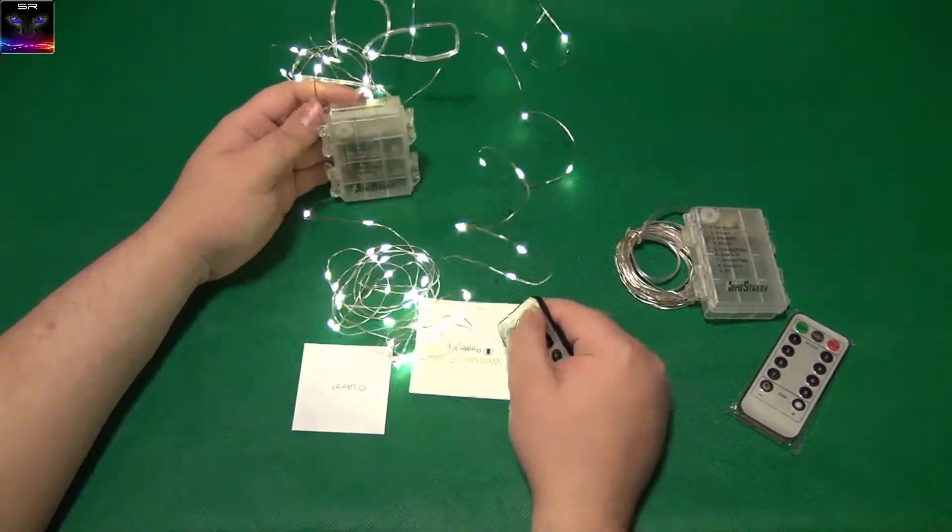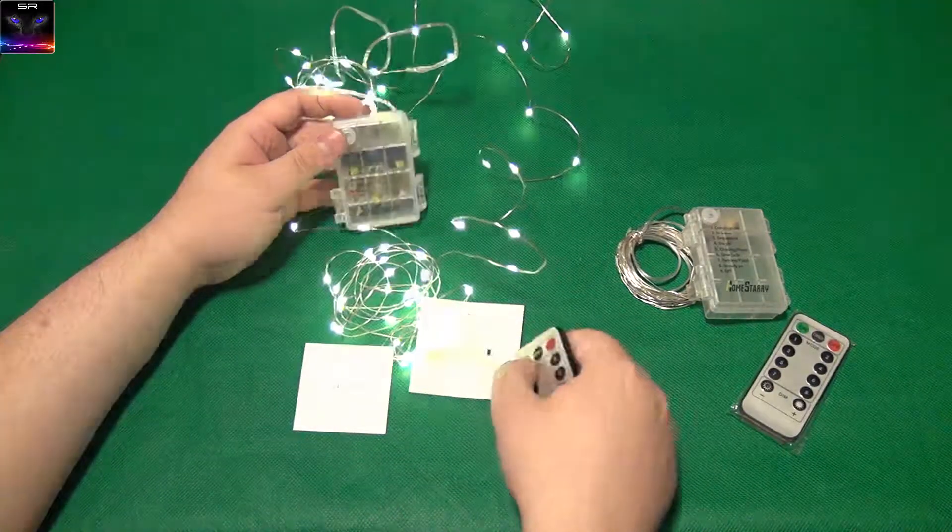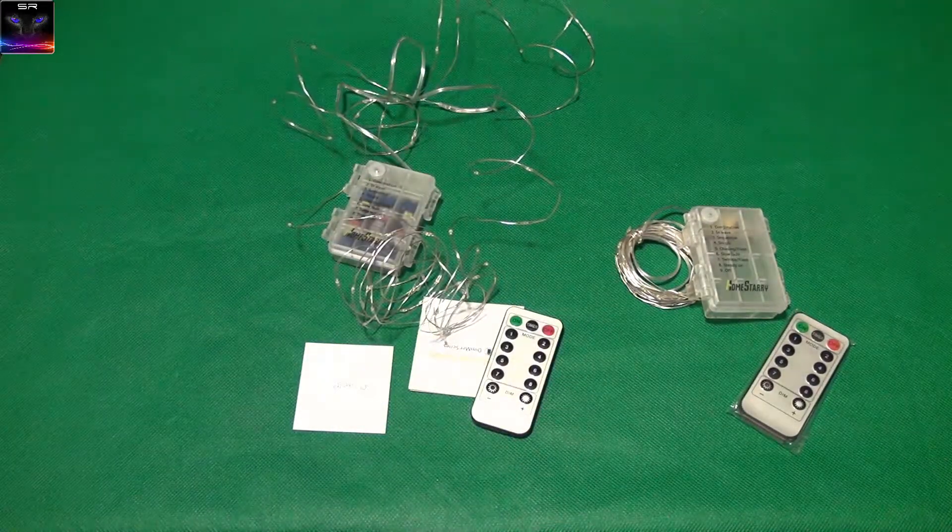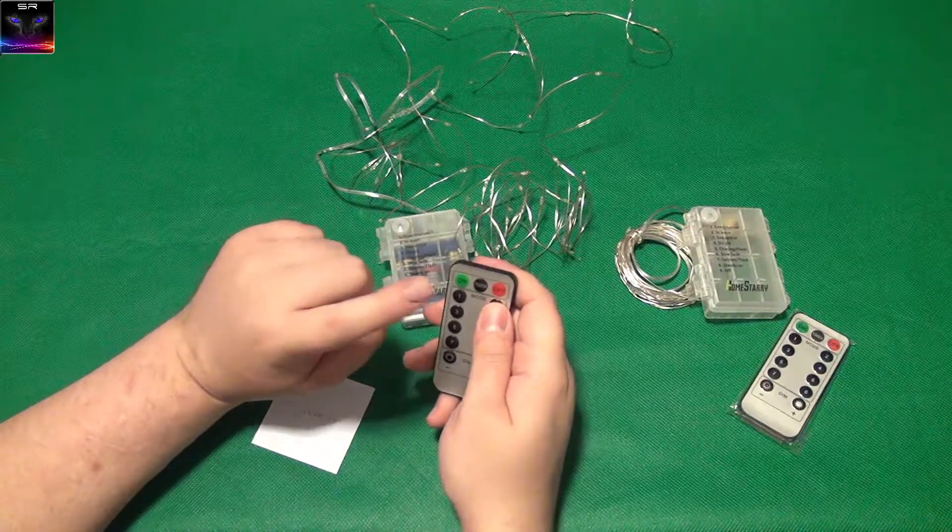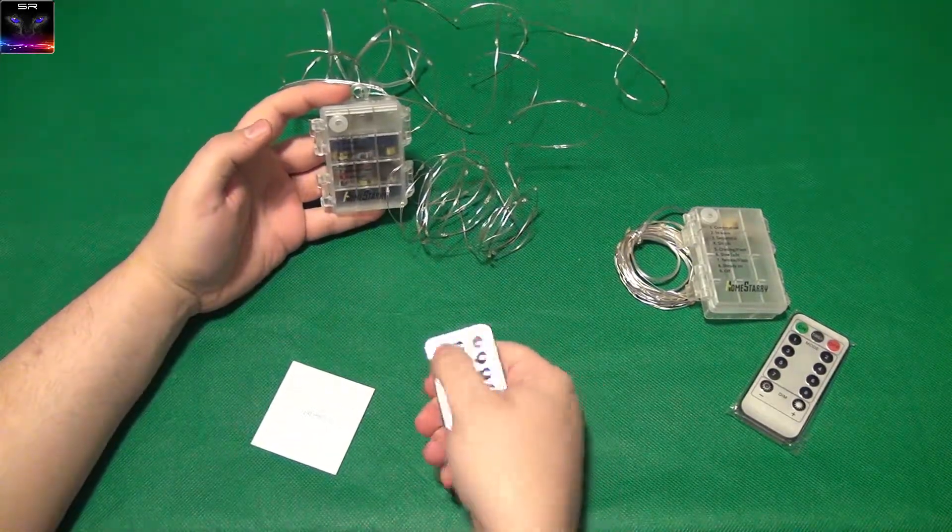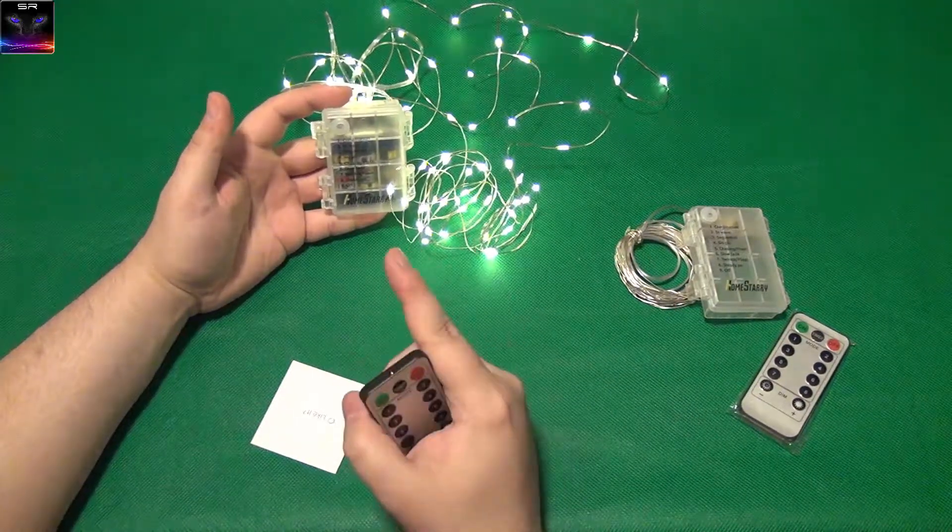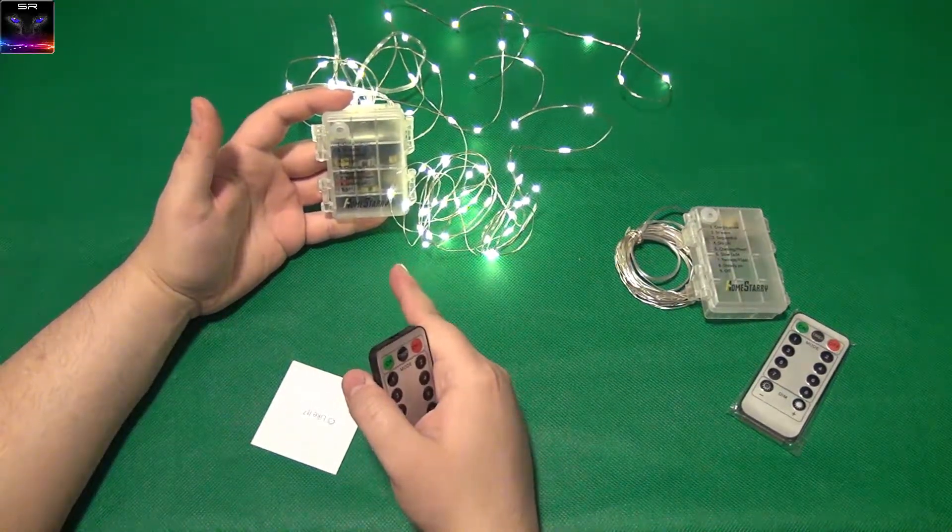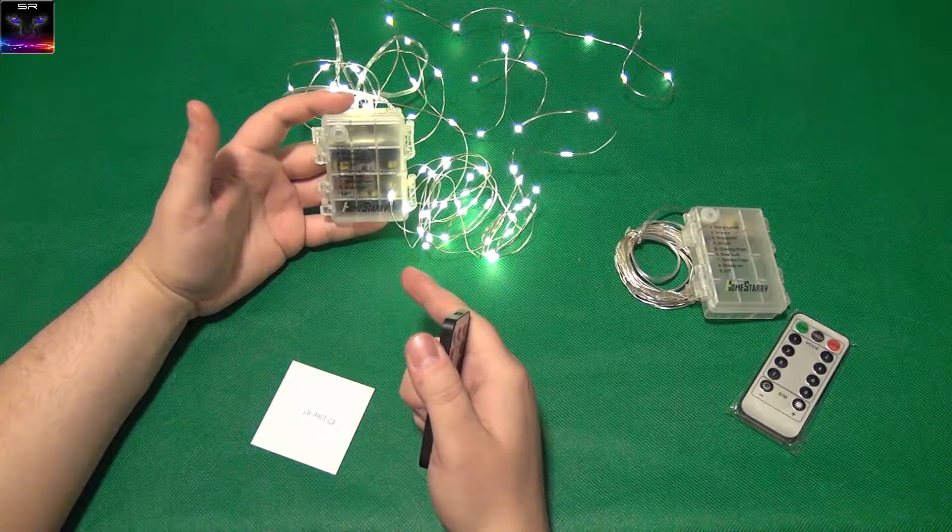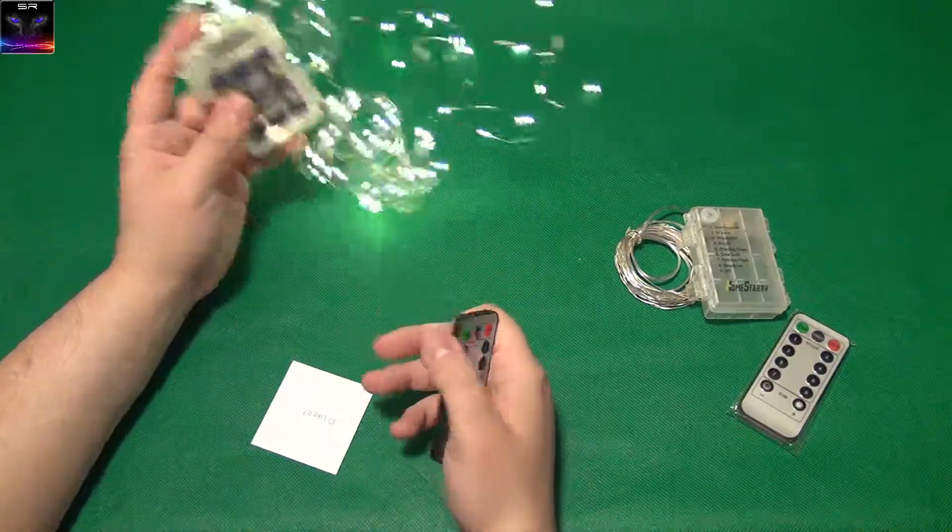I also have it on a timer. The timer function is basically you turn it on, it doesn't turn on the timer. You have to press the on button and then you press the timer. It blinks and now it will stay on for six hours, then it's gonna turn off for 18 hours, and after that it's gonna turn on again for six hours.